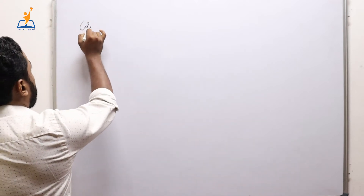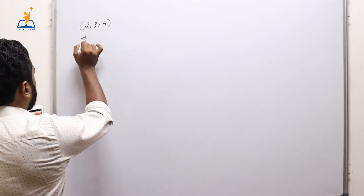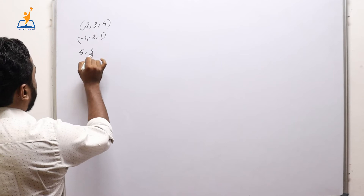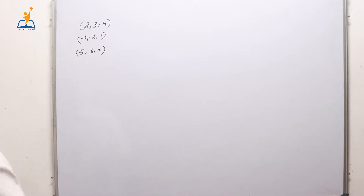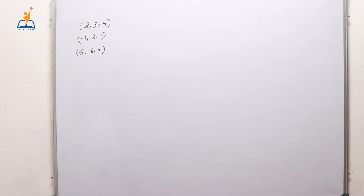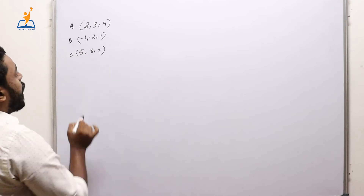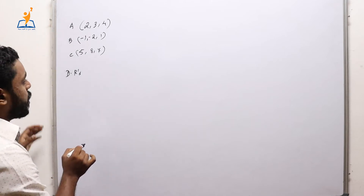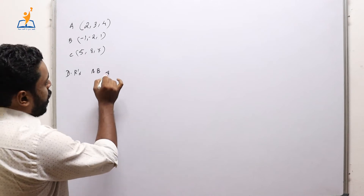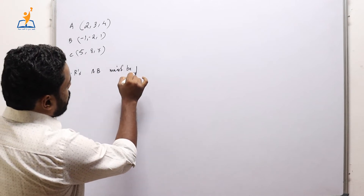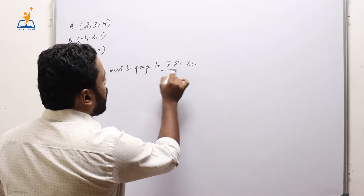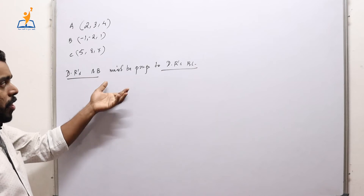Moving to the fourth question: show that the points (2, 3, 4), (−1, −2, 1), and (5, 8, 7) are collinear. In order to show that three points A, B, C are collinear, we learned that the direction ratios of AB must be proportional to the direction ratios of BC. So we find direction ratios of AB and BC and check proportionality. When two points X1, Y1, Z1 and X2, Y2, Z2 are given, direction ratios are X2−X1, Y2−Y1, Z2−Z1.